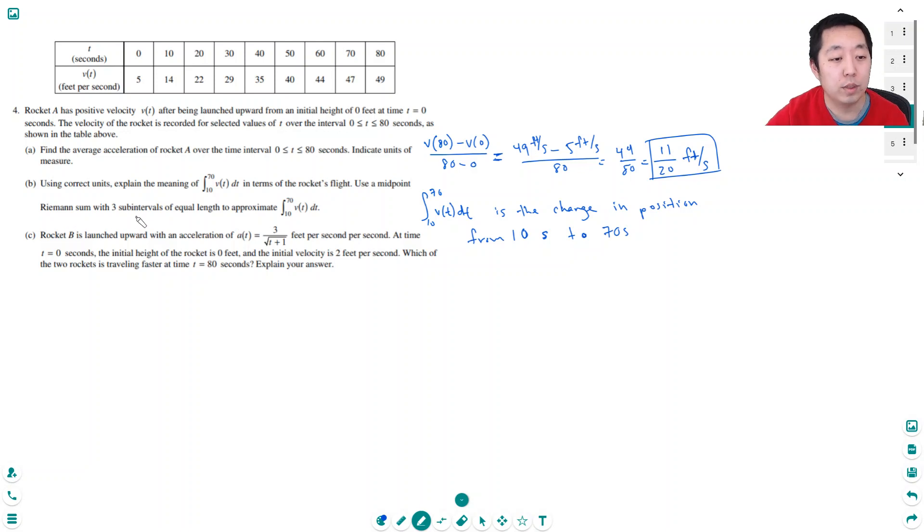Use a midpoint Riemann sum with 3 sub-intervals of equal length to approximate the integral from 10 to 70. The total interval width is 60, so each one needs to be 20. So I need to go from 10 to 30, then 30 to 50, then 50 to 70. And I'm approximating the area. To approximate the area, I want the width of each rectangle, which is 20.